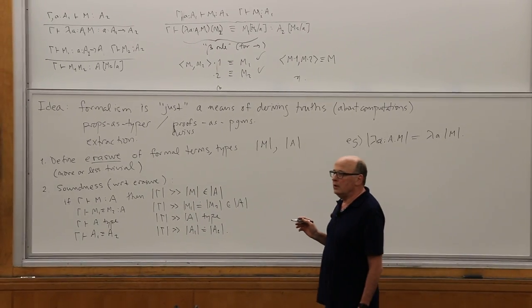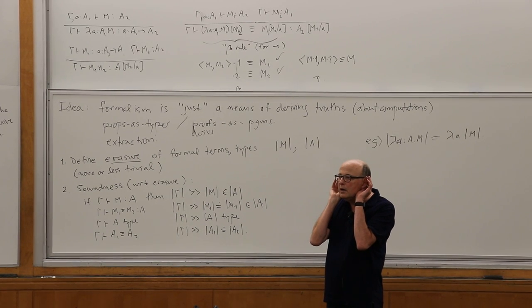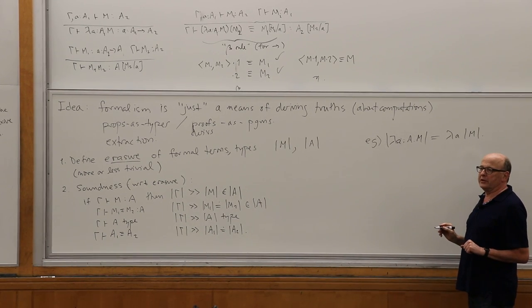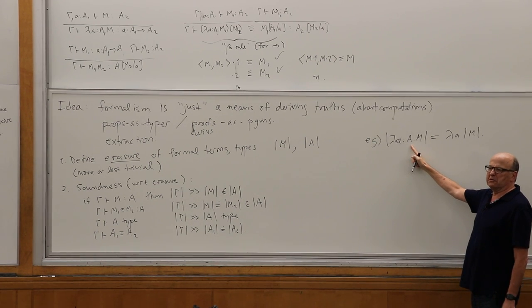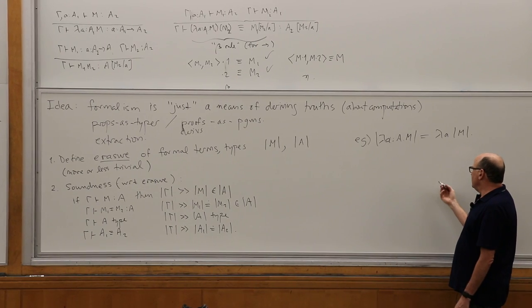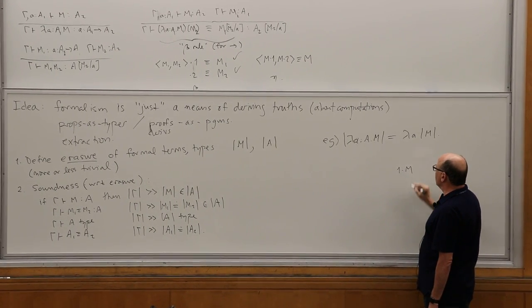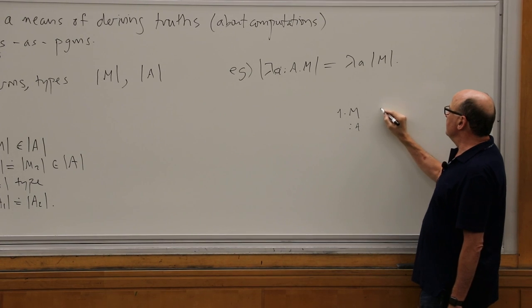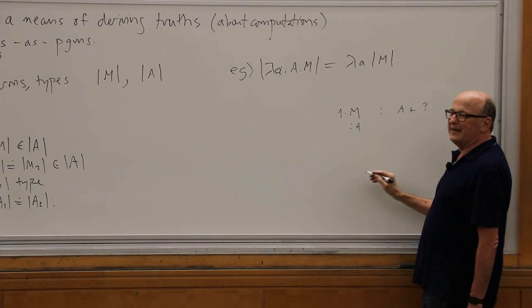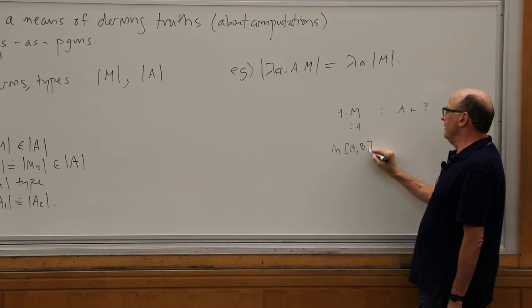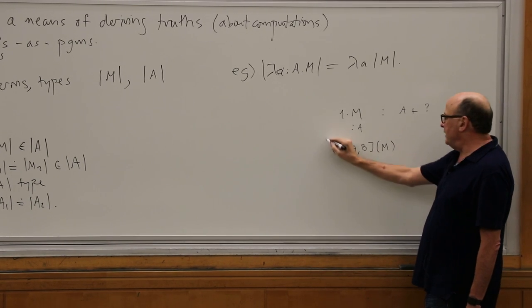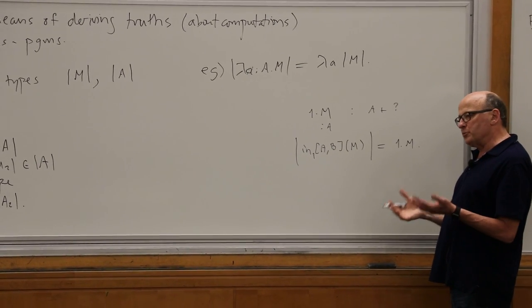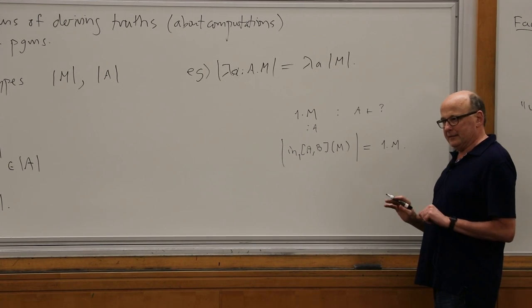Question: what do the vertical bars denote? I'm going to define some notion of erasure. For this moment, all I care about is getting rid of type labels. In a formalism with sums, you can't really get away with writing '1.m' if you expect to read the type off every term — you don't know what the other component's type is. Officially it becomes A plus B, and then quite likely I'm going to erase that to just '1.m' because that's all I need at runtime.